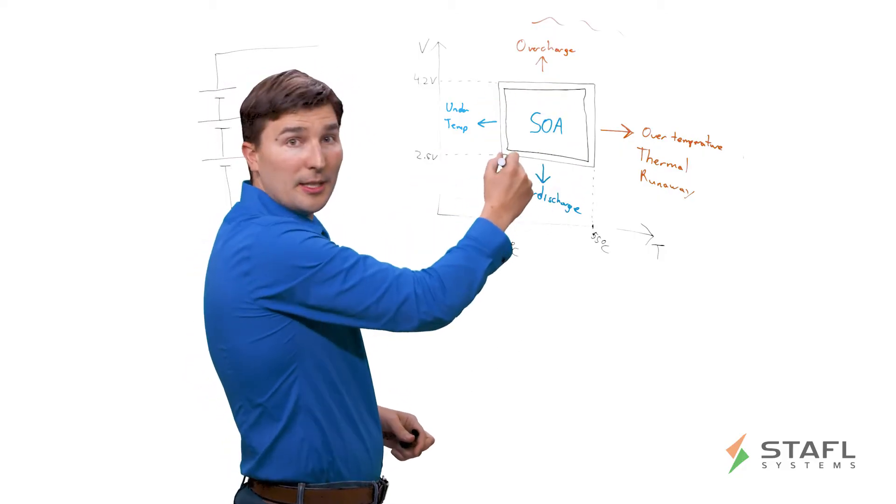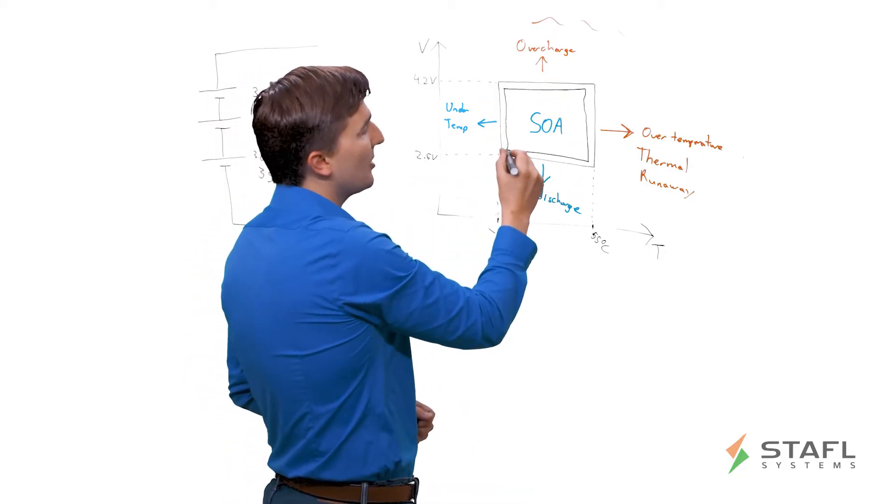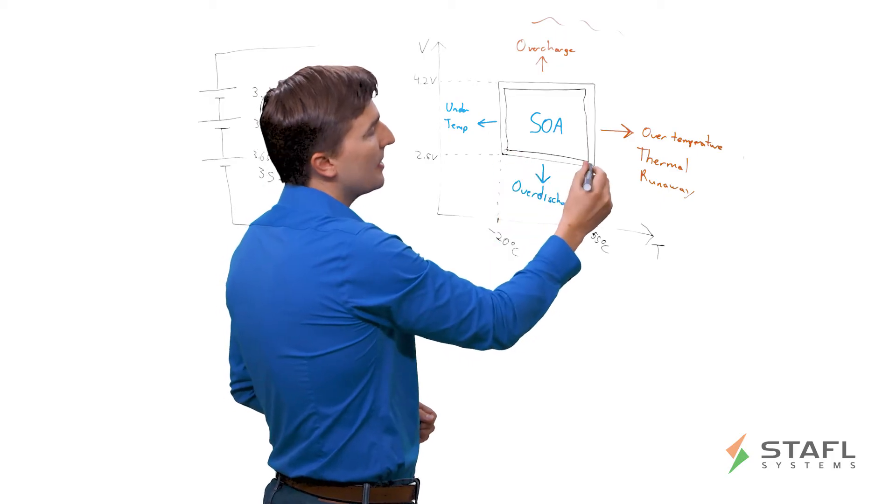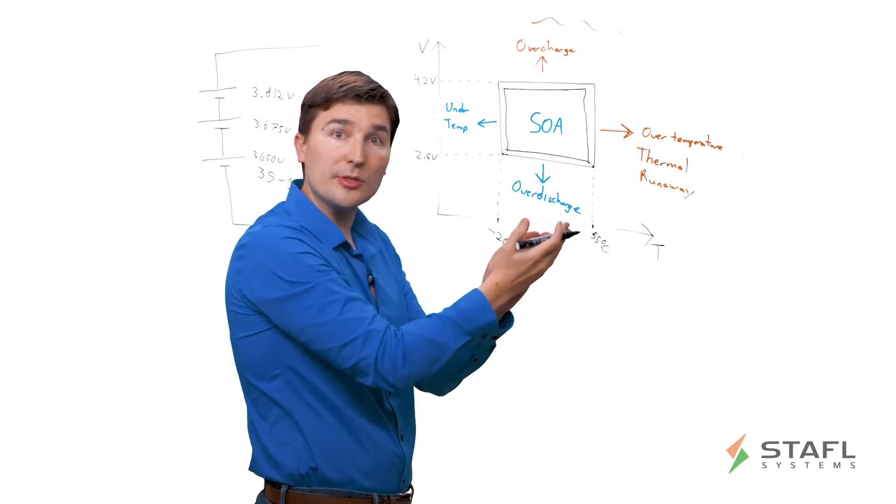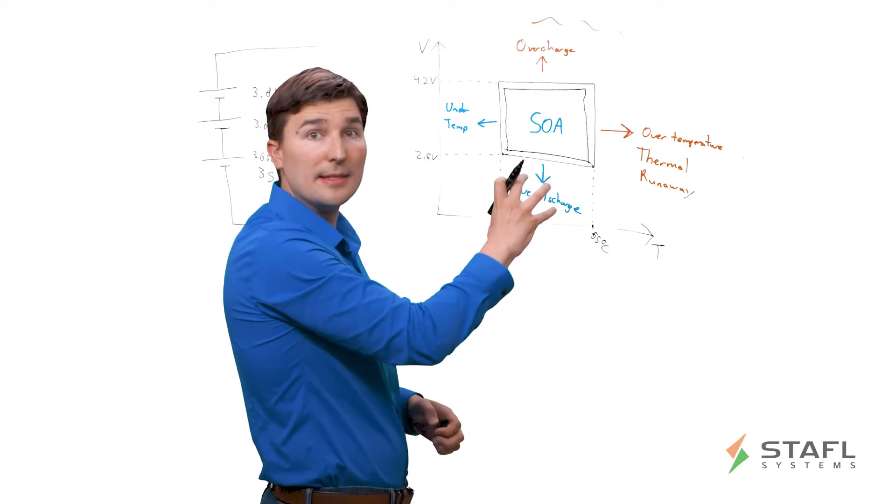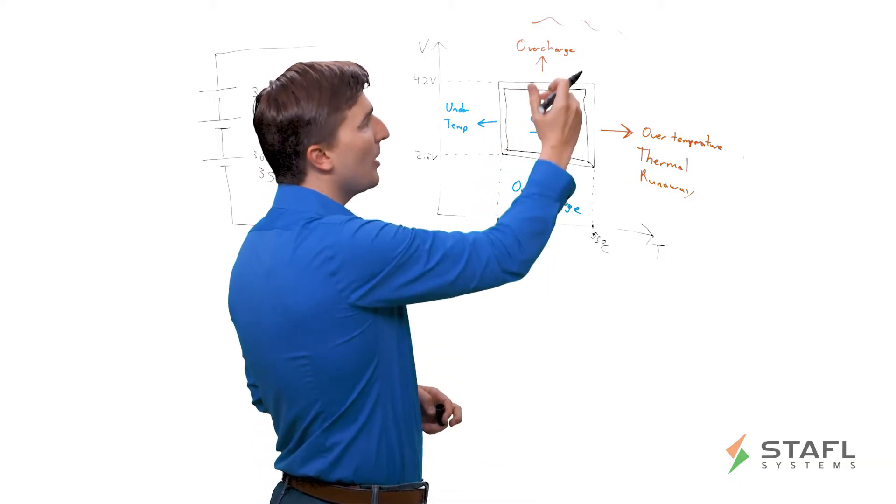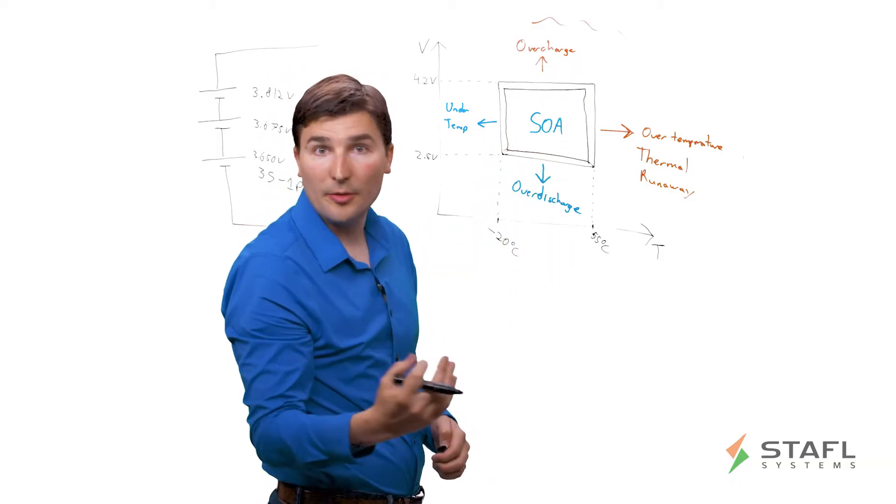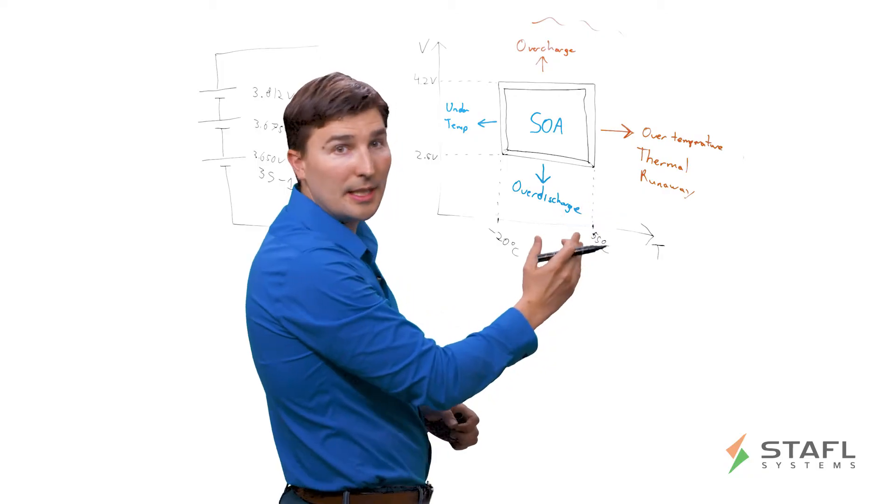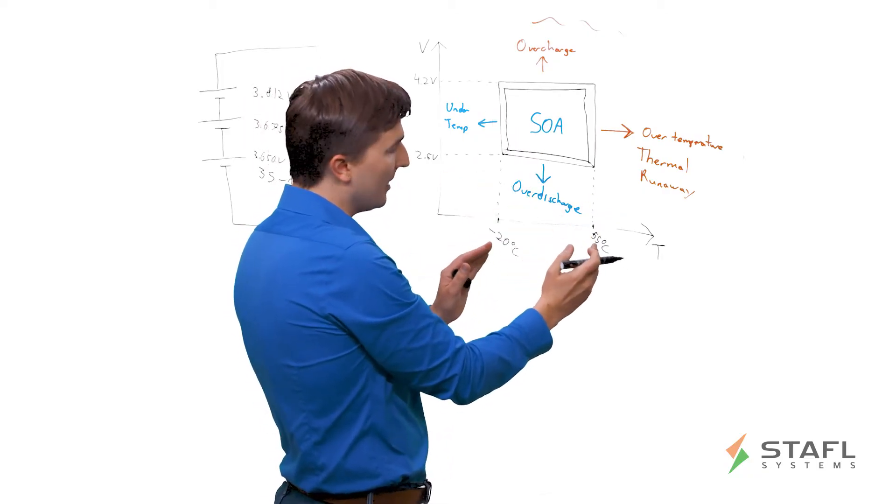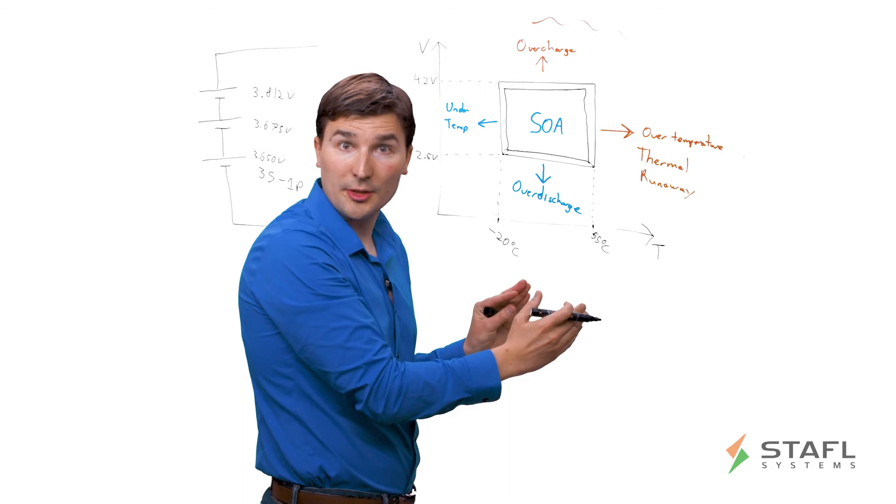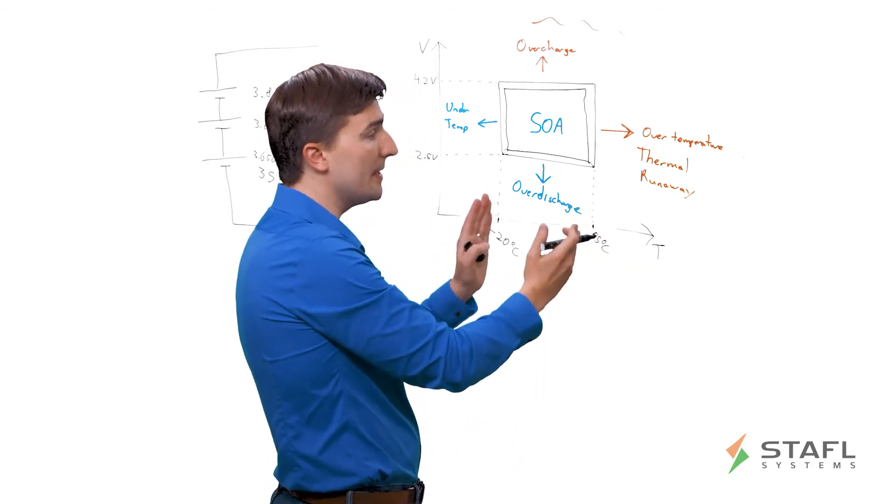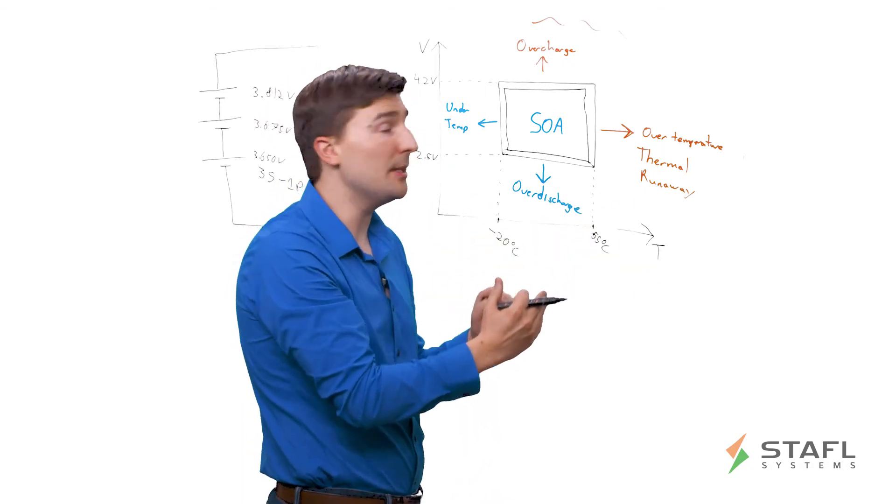The reason I drew another box within this box is because you always want to have some margin in your fault and safety system against what's really a dangerous condition versus what the BMS is actually going to protect against. So you might want to have a threshold of 100 millivolts, 5 degrees C, something like that. So you need to look at what are the safety limits as defined by the cell manufacturer and then what are the safety limits derated that you want to actually implement in the BMS.